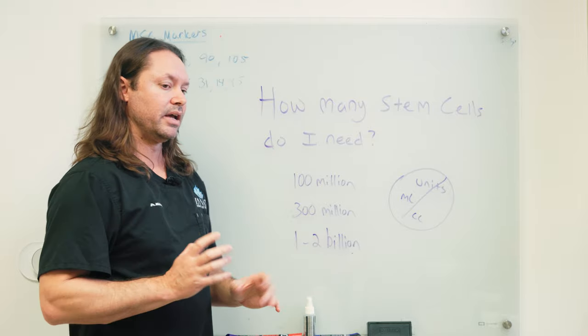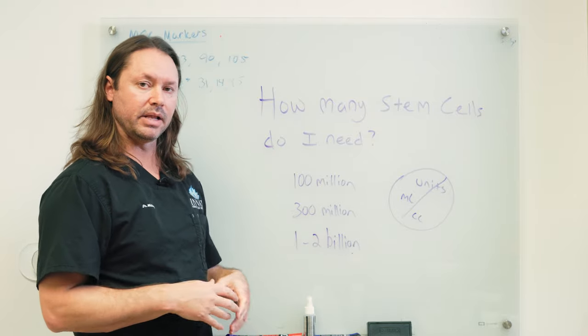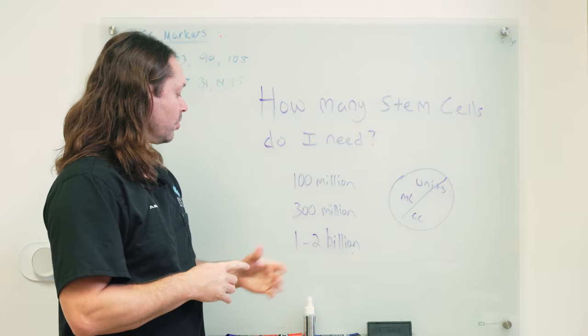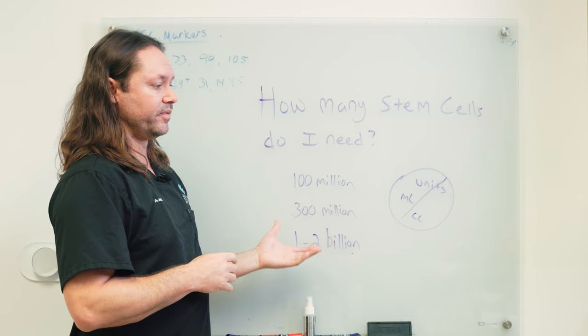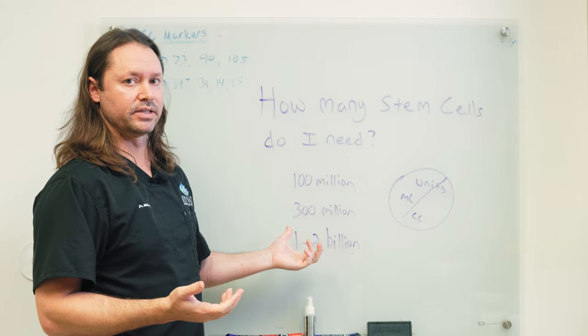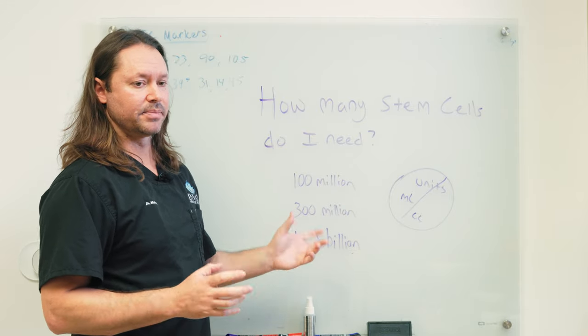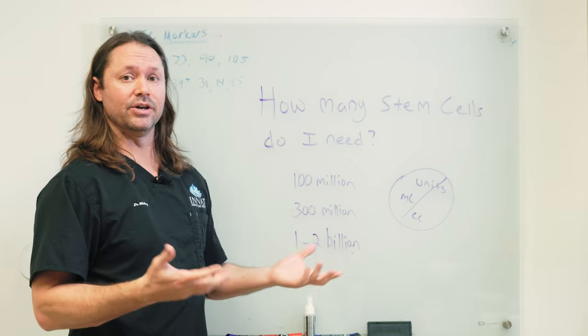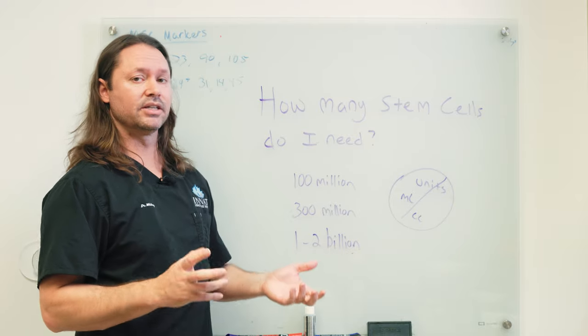You can do 100 million, and then sometimes I'll bring a patient back and we'll apply another 100 million. Or something we see in very chronic conditions like moderate to severe autism, Alzheimer's, Parkinson's, diabetes, something where it's going to take a year or so at least to really see the transformation that you want to see.